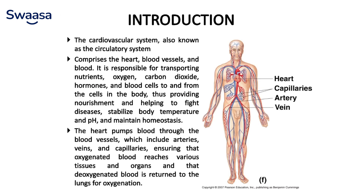Coming to the introduction, the cardiovascular system is also known as the circulatory system, which comprises the heart, blood vessels, and blood. It is responsible for transporting nutrients, oxygen, carbon dioxide, hormones, and blood cells to and from the cells in the body, thus providing nourishment and helping to fight disease, stabilize body temperature and pH, and maintain homeostasis. Homeostasis is basically balancing the internal and external environment.